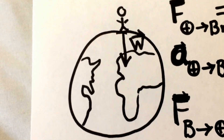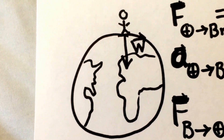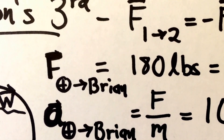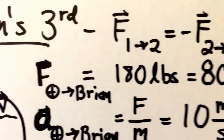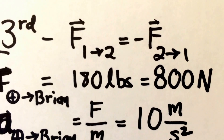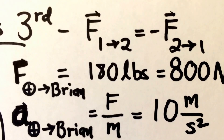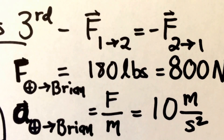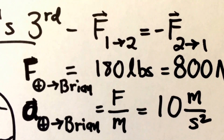Of course, the Earth's gravity pulls me down with a weight W. That force of my weight is equal to about 180 pounds — that's the force of Earth's gravity on me — which corresponds to about 800 Newtons of force. I can convert that force into an acceleration by dividing the force through by my mass, and what you find is that everyone feels an acceleration due to Earth's gravity of about 10 meters per second squared.